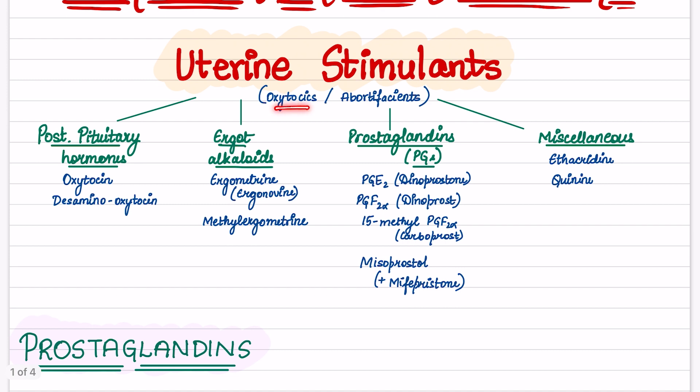They are also known as oxytocics or abortifacients. These are majorly of four types: posterior pituitary hormones, ergot alkaloids, prostaglandins, and miscellaneous.